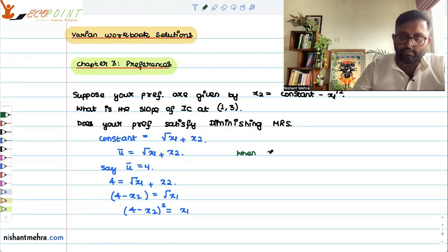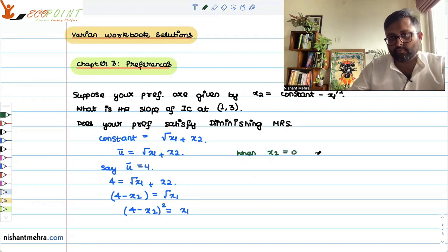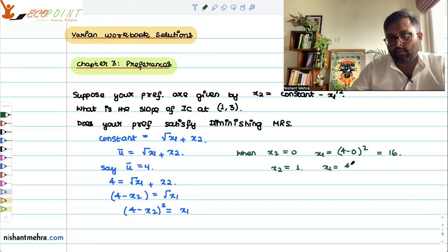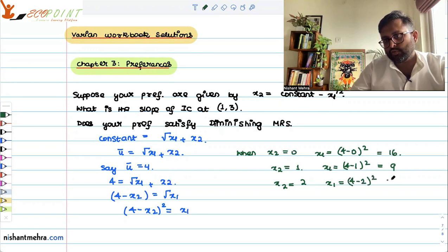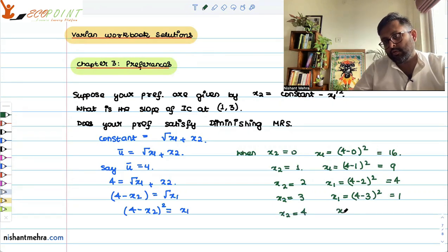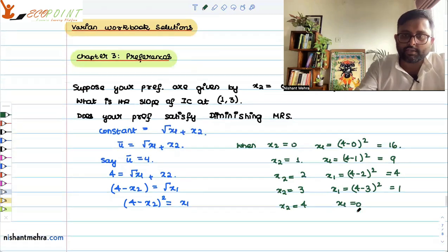You can take up different points. For example, if x2 equals 0, then x1 equals 16. If x2 equals 2, then 4 minus 2 squared, x1 is 4. If x2 is 3, x1 is 1 squared, that is 1. And if x2 is 4, x1 is equal to 0.